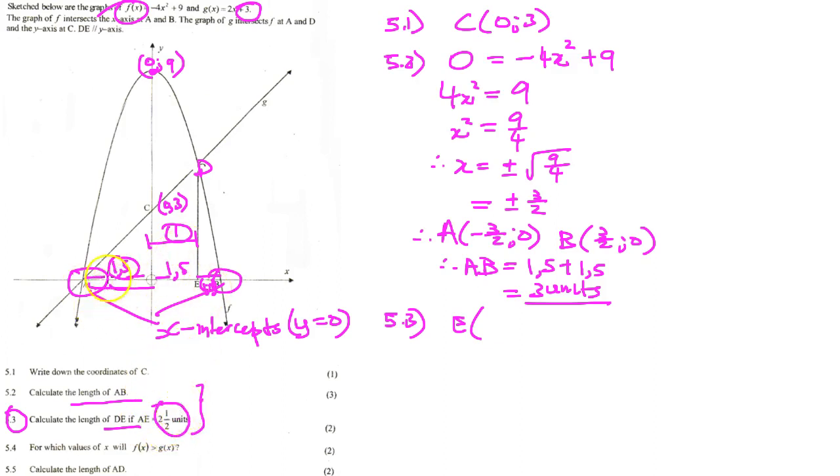So if from A to the origin is 1.5 units, how much more must it be to E for us to get to 2.5? One more unit, isn't it? So that means that E has to be 1, 0 because E is an x-intercept. Can you see that? So E is now going to be (1, 0).